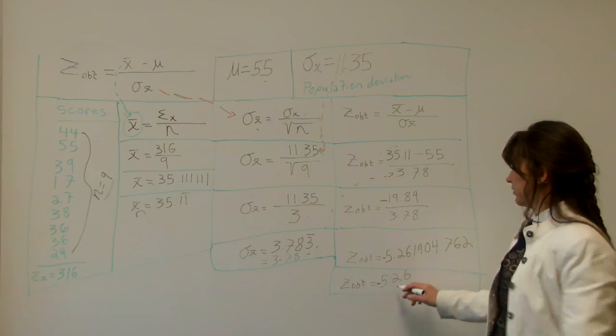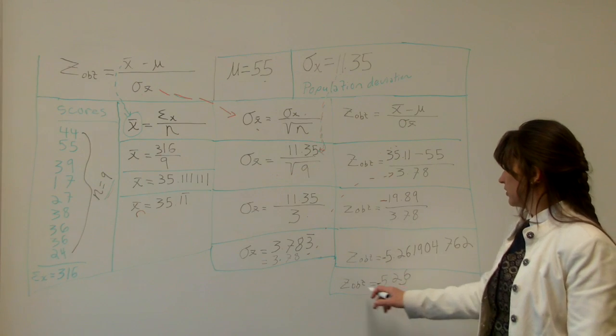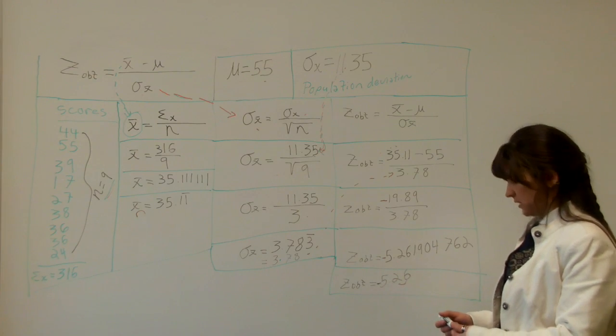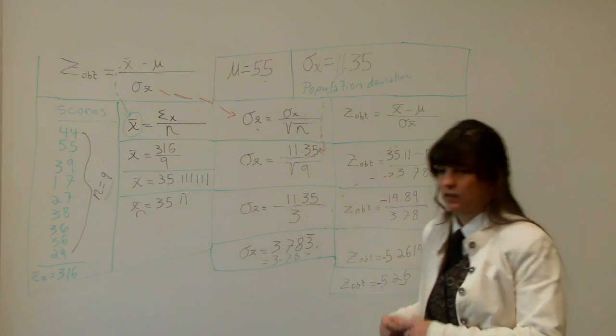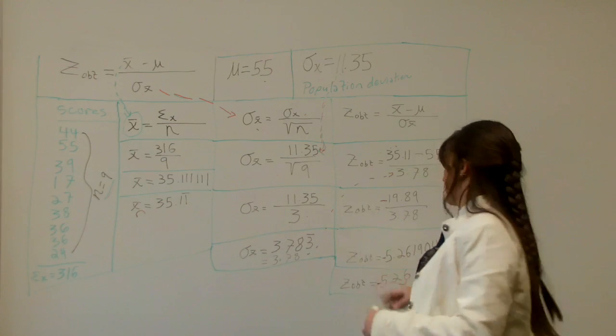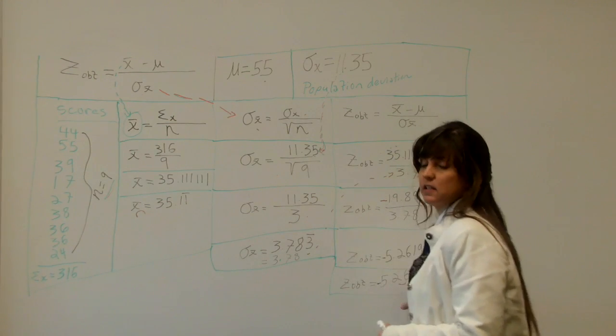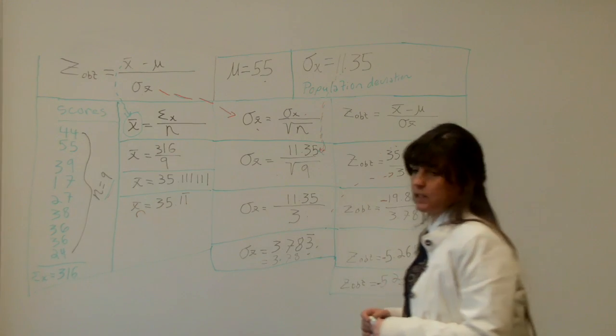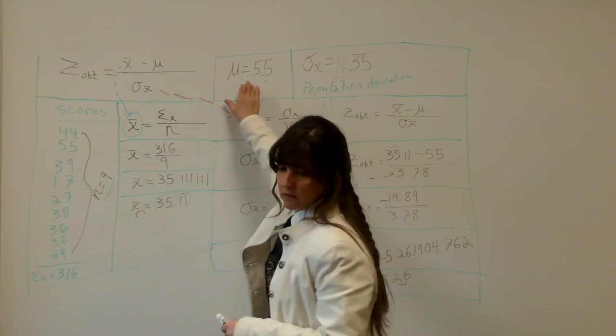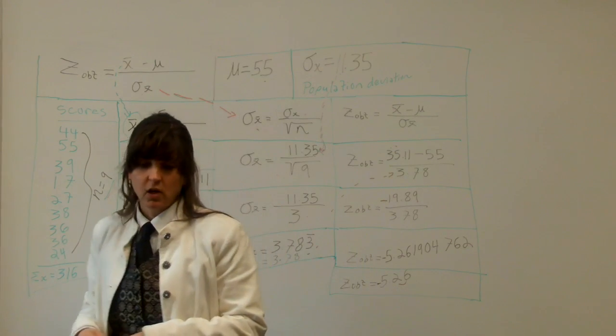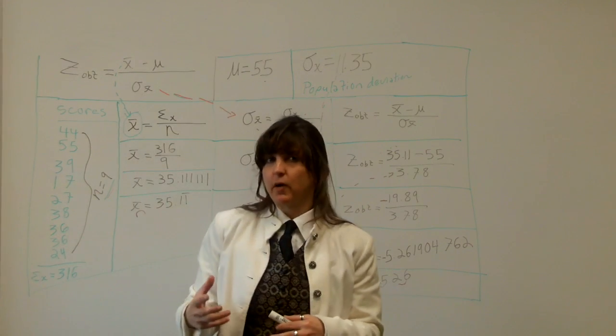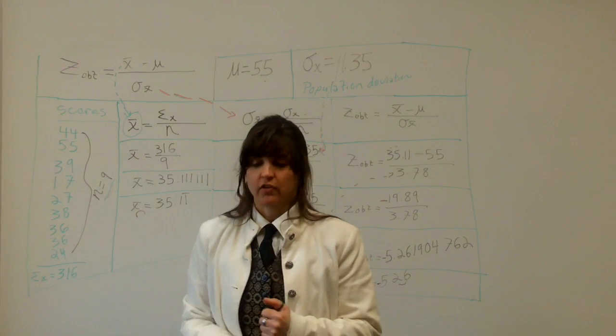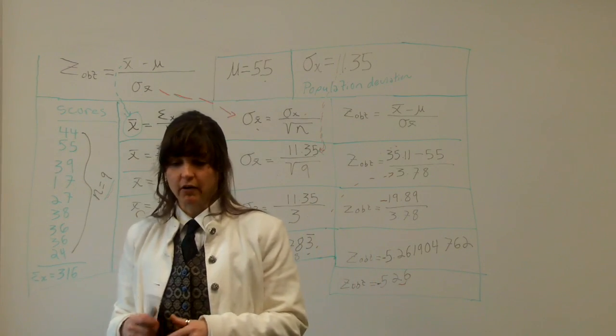And we want to get that over to two decimal places. So the Z obtained equals negative 5.26, which just makes me think, what's going on over here? The Z obtained is so far below the population mean. What's going on? There must be a grave error possibly, which is a type 1 error, which other videos will explain the difference between type 1 and type 2 error.